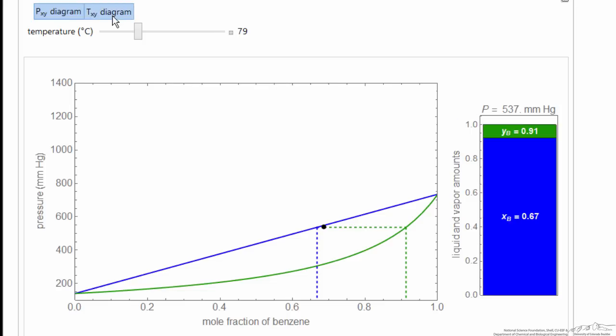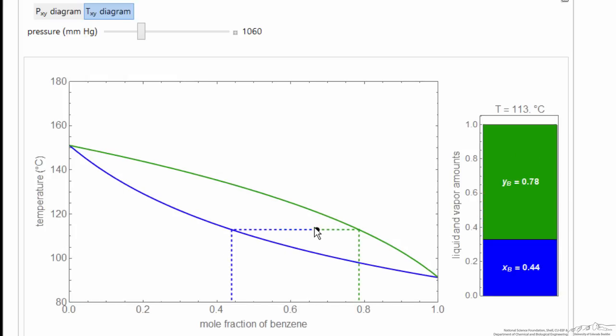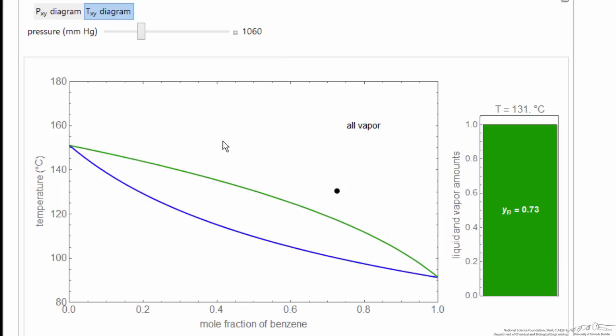The corresponding T-x-y diagram also allows you to move with your mouse, move the black dot around and change the fractions, and of course also change the temperature, move it into all vapor.